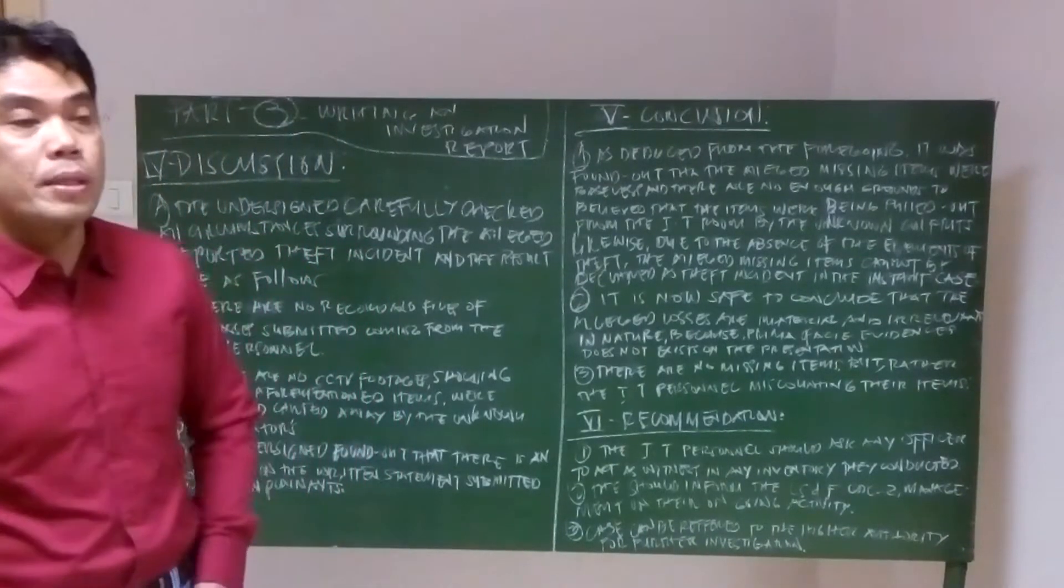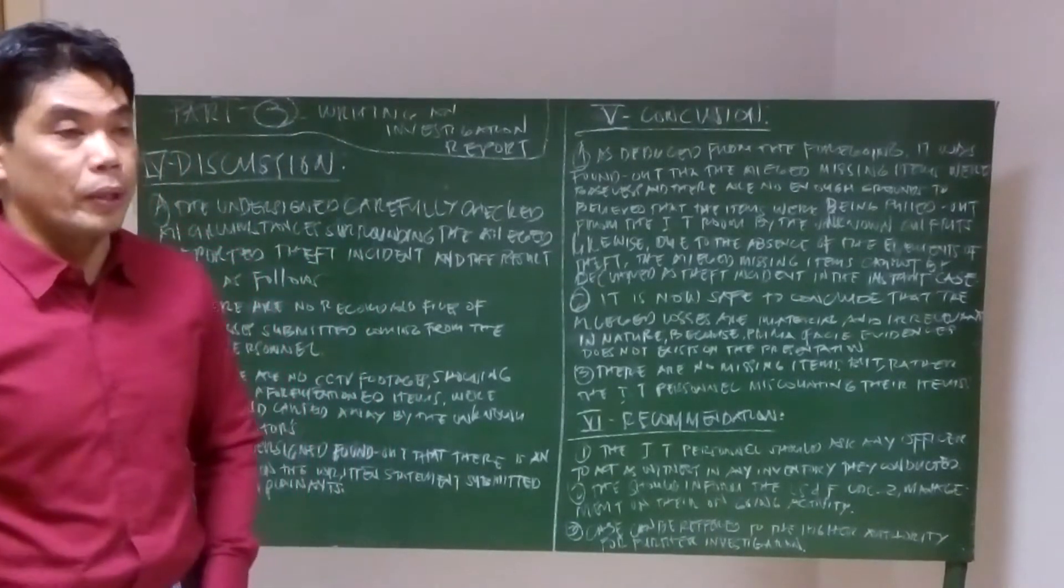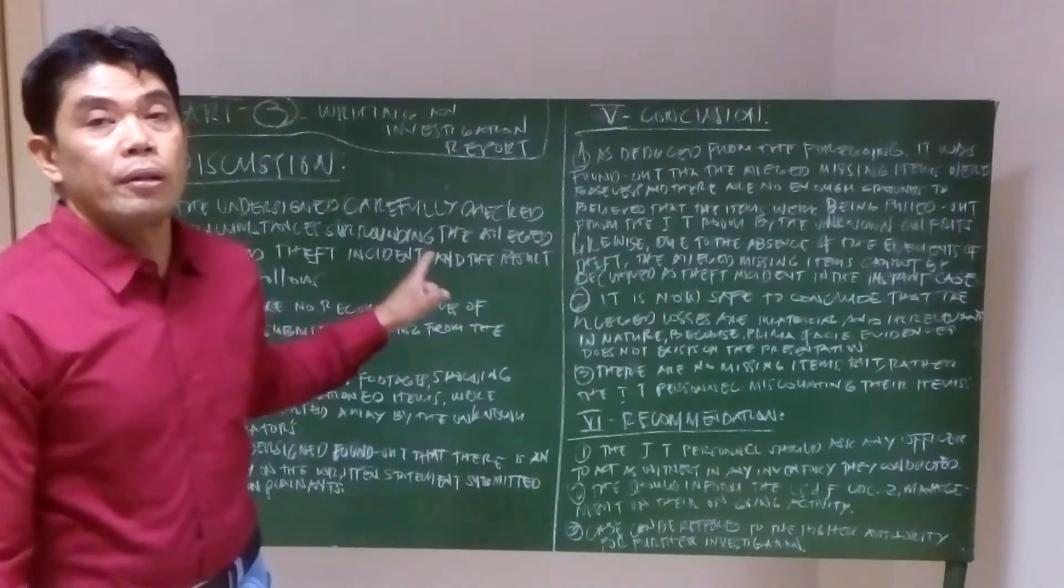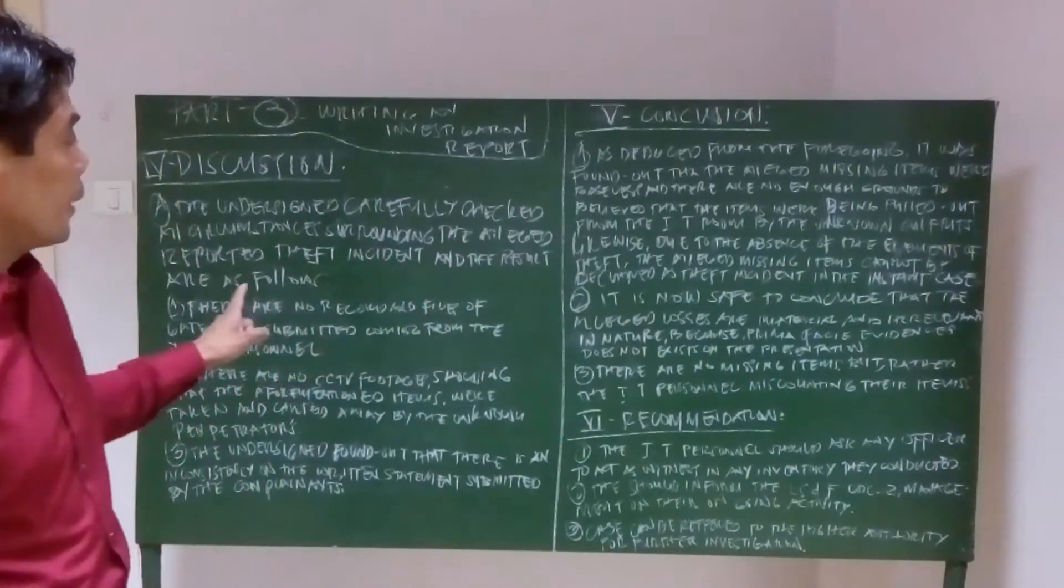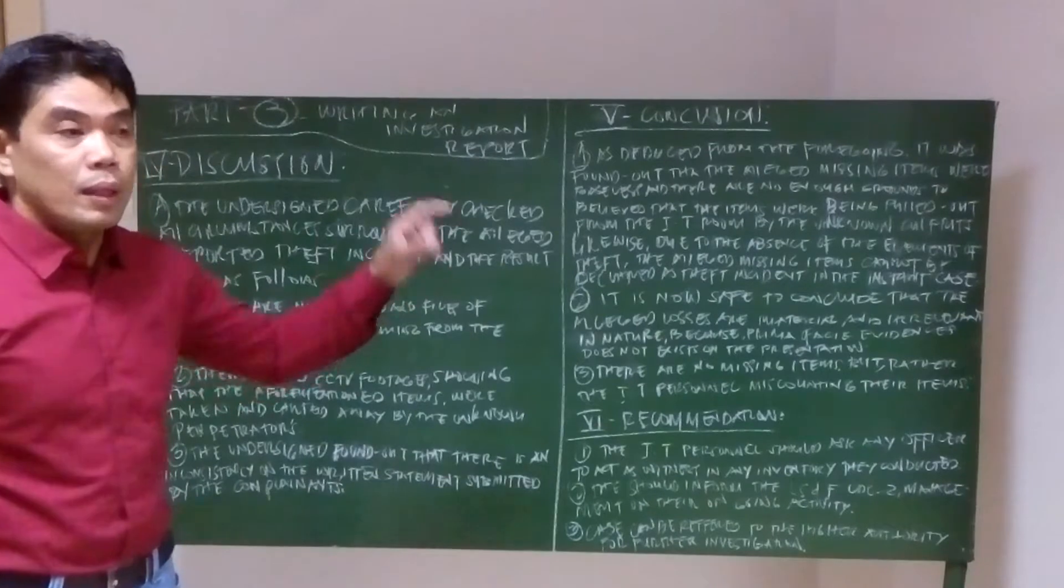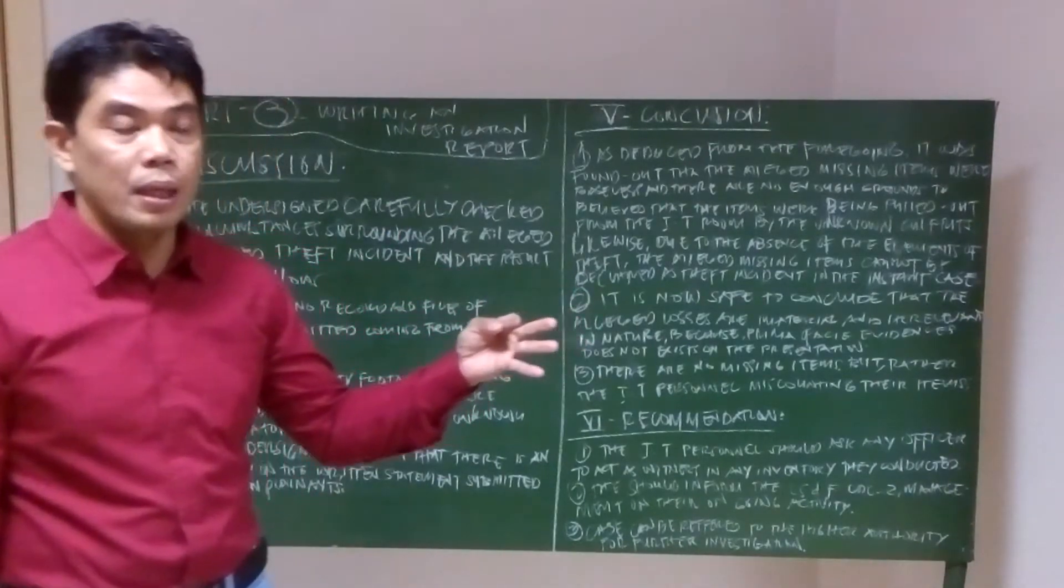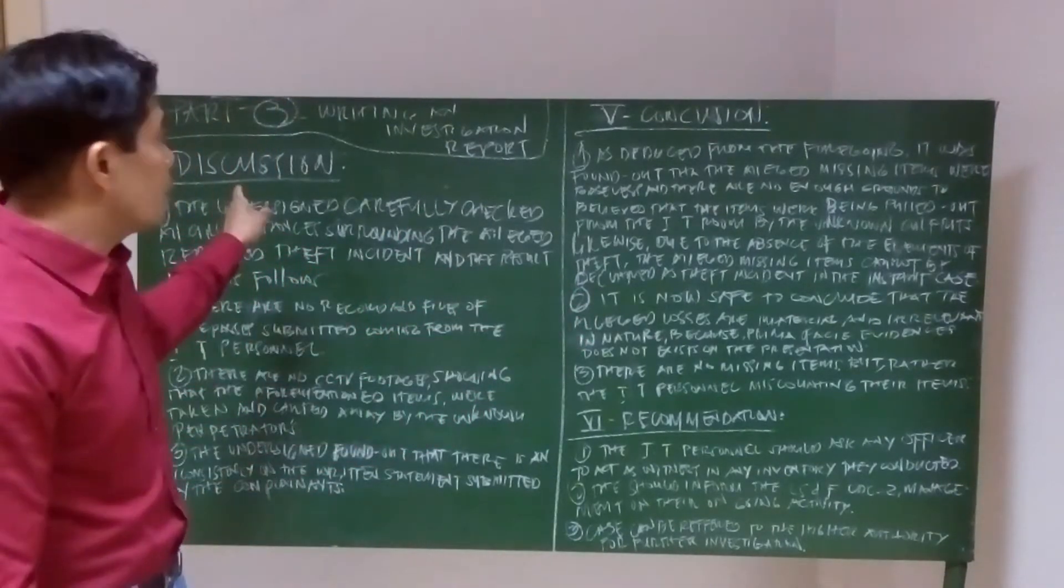Welcome back to our episode on writing an investigation report. We tackle now part 3, which is the last part. We've been through the authority markers, investigated facts of the case, and now we discuss the discussion, conclusion, and recommendation.